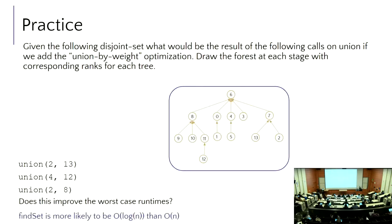Find set is more likely to be O(log n) in this case because by having the small tree absorbed by the big one, we reduce those heights a little bit. That action of going into the set and traveling up to find its representative is called find set. Any call to union contains within it a call to find set. When talking about the runtime of union, you must always include the runtime of find set, because that's inherently part of the algorithm.